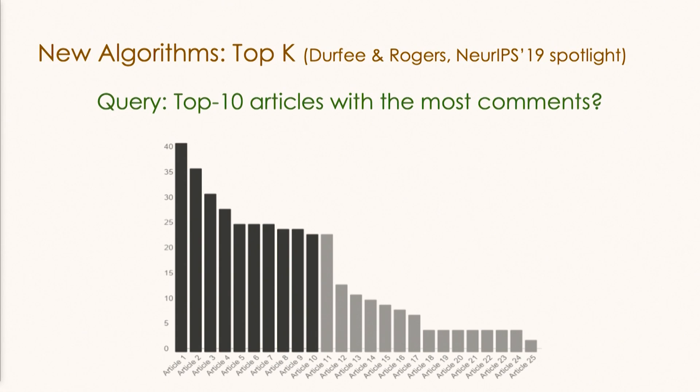We are still very early in our progress, but we have made some good progress on the global differential privacy model front. Recently, folks on my team shared new developments in an algorithm they call the Top-K Algorithm at a New York conference. For those interested in details, please take a look at their paper. At a high level, their paper tackles applying differential privacy to queries that are extremely common in how companies share data externally — such as: give me the top ten articles on LinkedIn that have the most comments.